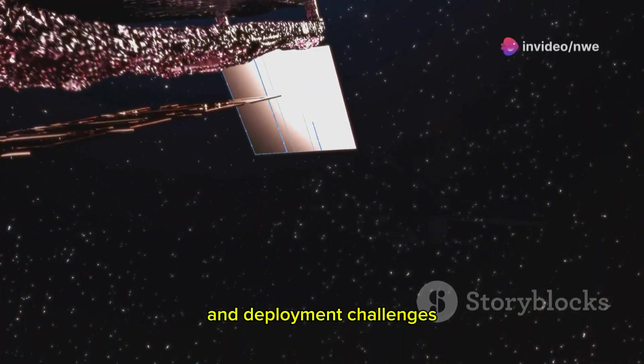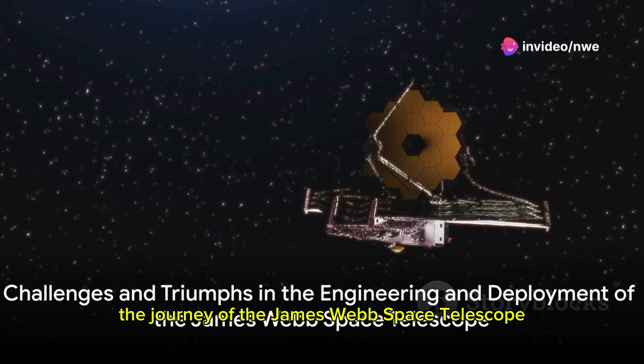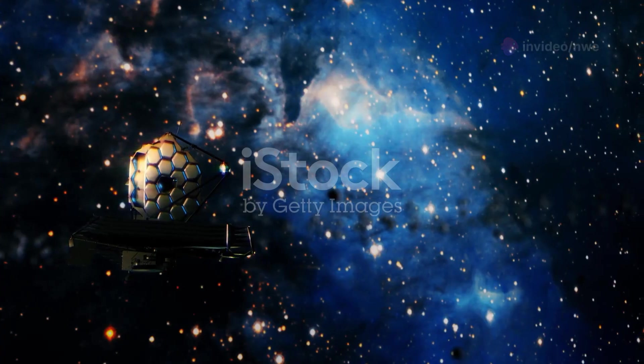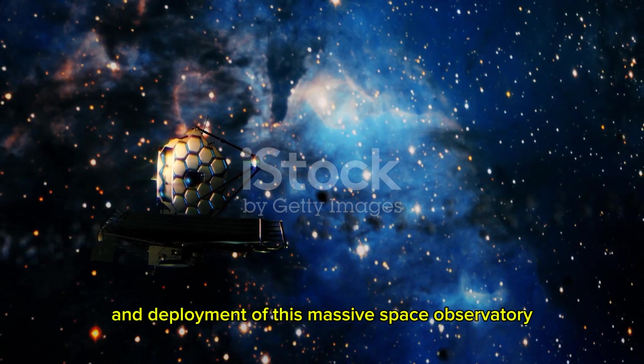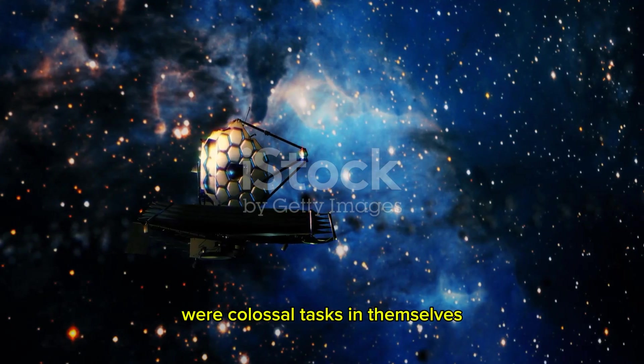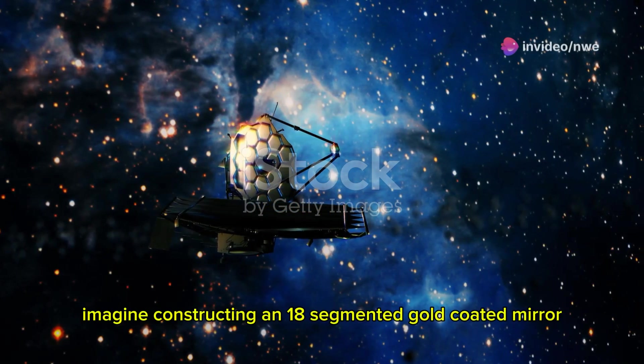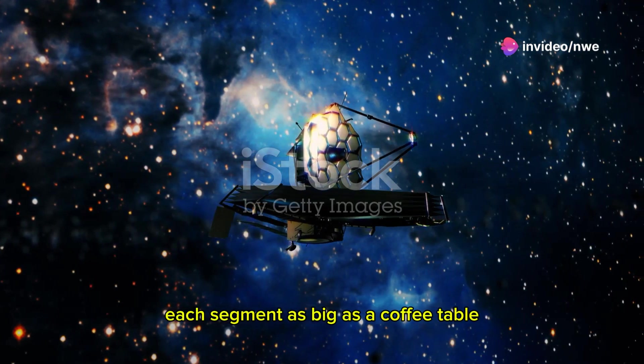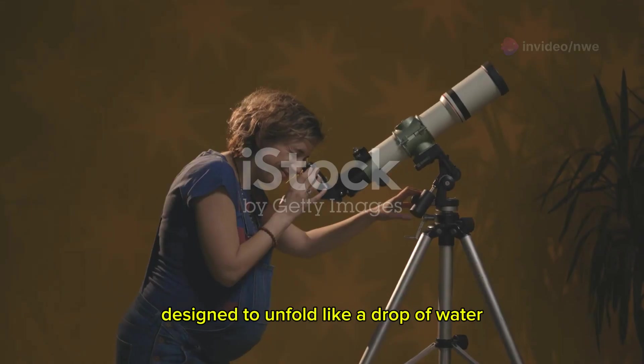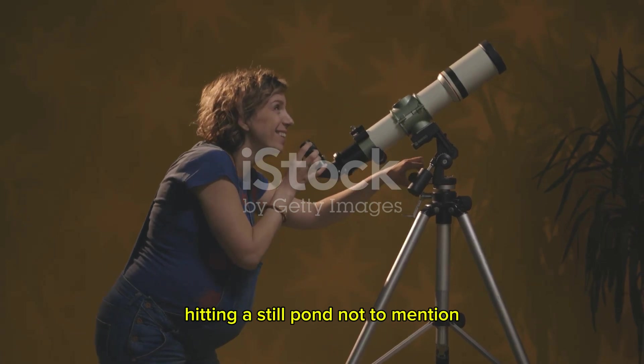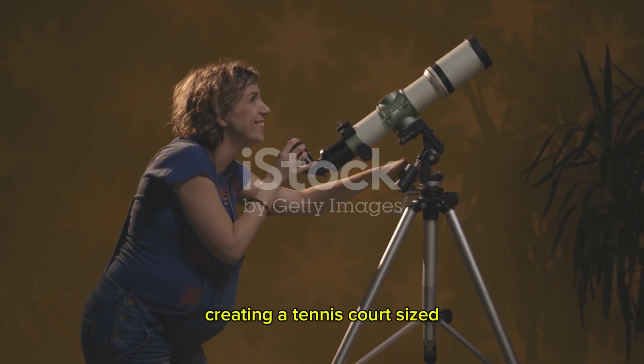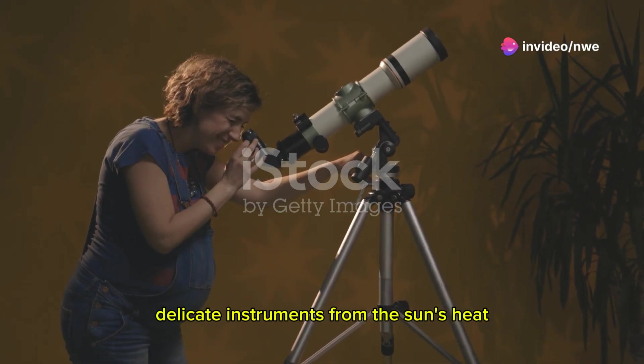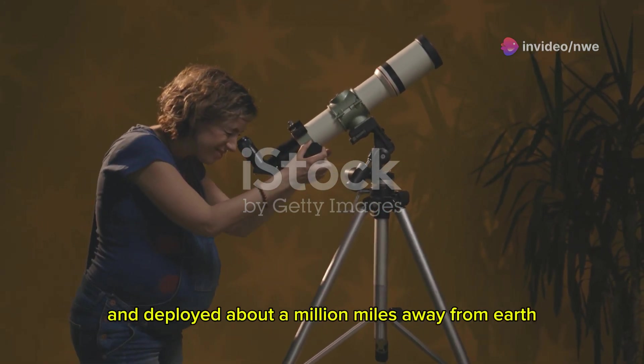These features not only make it possible to achieve its scientific objectives but also present a number of engineering and deployment challenges. The journey of the James Webb Space Telescope from concept to reality was not without its challenges. Imagine constructing an 18-segmented gold-coated mirror, each segment as big as a coffee table, designed to unfold like a drop of water hitting a still pond. Not to mention creating a tennis court-sized, five-layer sun shield to protect the telescope's delicate instruments from the sun's heat, all to be packed into a rocket and deployed about a million miles away from Earth.